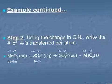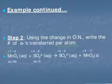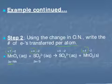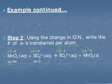For step 2, we determine the number of electrons transferred per atom. Since manganese's oxidation number went from +7 to +4, each atom of manganese gained 3 electrons. Whereas for sulfur, it went from +4 to +6, so per atom of sulfur it lost 2 electrons.